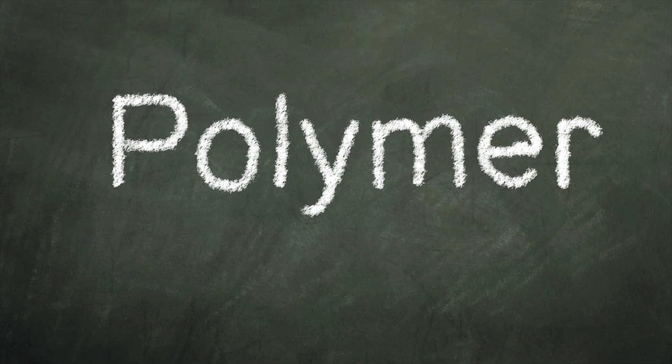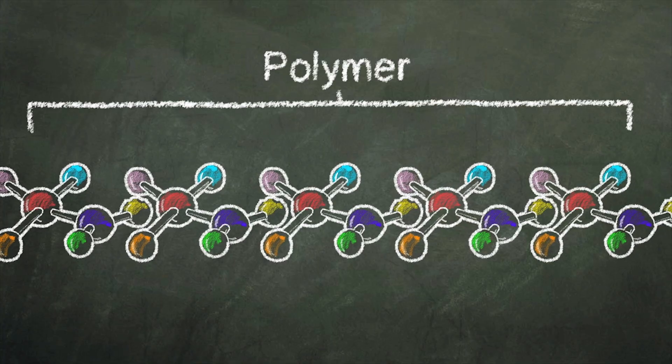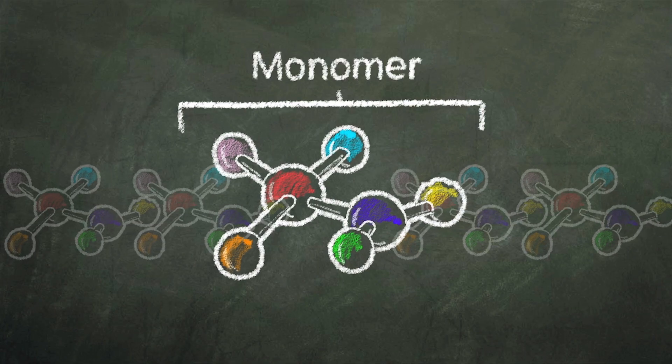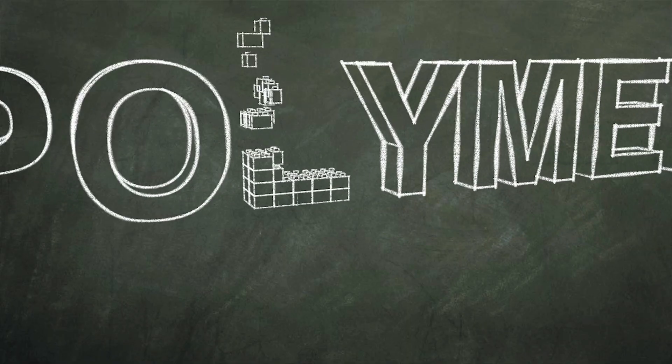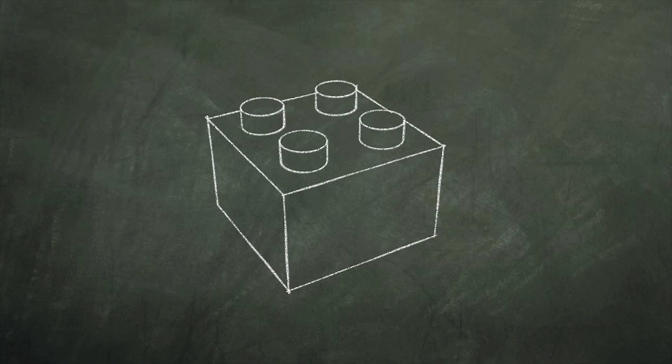The word polymer literally means many parts, but a polymer isn't a specific thing. It's anything, usually a molecule or material, made of smaller repeating bits called monomers. Polymers are large molecules formed by linking together smaller repeating units called monomers.